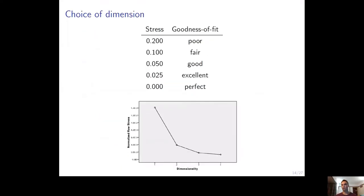How many dimensions should we actually use? There is a rule called the elbow rule, or diminishing returns. We choose the number of dimensions such that adding one more dimension wouldn't improve accuracy too much but would make interpretation much harder. In this example, we should probably choose two or three dimensions — there is no point in going to four dimensions because we don't get much better precision but it makes interpretation much harder.